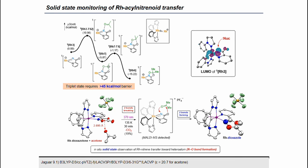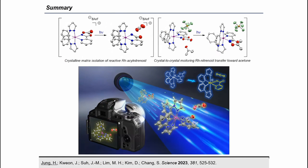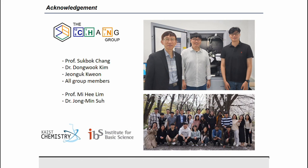To summarize today's talk, we have elucidated the intermediacy of transition metal acyl nitranoid species, which is a key intermediate in catalytic CH amination. Strategic design of the target rhodium dioxazolone complex and photocrystallographic analysis gave us complete mechanistic snapshots of the rhodium-catalyzed acyl nitranoid transfer process. I would like to thank my supervisor Professor Sukbok Chang for his insight and guidance throughout my PhD study and this work, and also Dr. Dongwoo Kim for the amazing crystallographic work. Thank you all for your attention, and I hope you enjoyed this presentation.